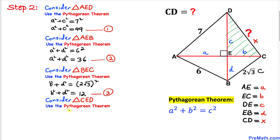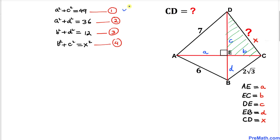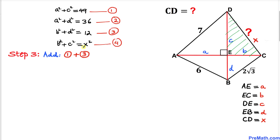Finally, let's focus on triangle CED. This is also a right triangle, and side length CD is the longest side. Applying the Pythagorean formula gives us b² + c² = x². Let's call this equation number four. We have now compiled all four equations.